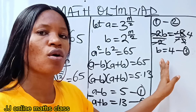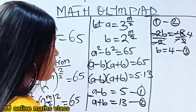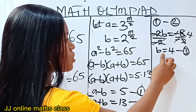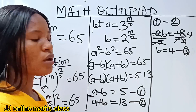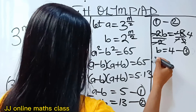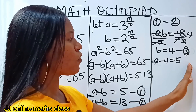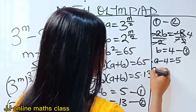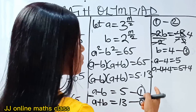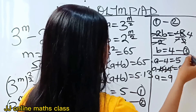Now you know how we solve simultaneous equations — when you have gotten a solution for one variable, we substitute what we got into any of the equations to get the other variable. We have gotten the value of b, so let's substitute b equals 4 into equation 1. We will have a minus 4 equals 5. Adding 4 to both sides, minus 4 plus 4 is 0, so a is equal to 9. We have found the values of both b and a.